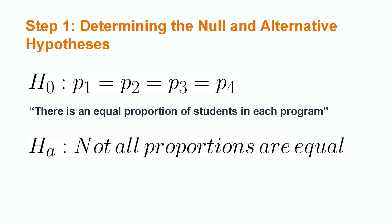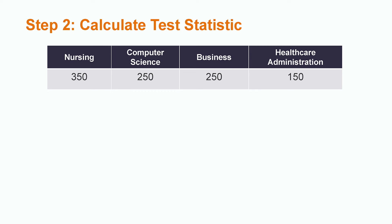For a chi-square goodness-of-fit test, our alternative hypothesis is only in the form of words and is stated as not all proportions are equal. In this case, it would be not all programs have an equal proportion of students.